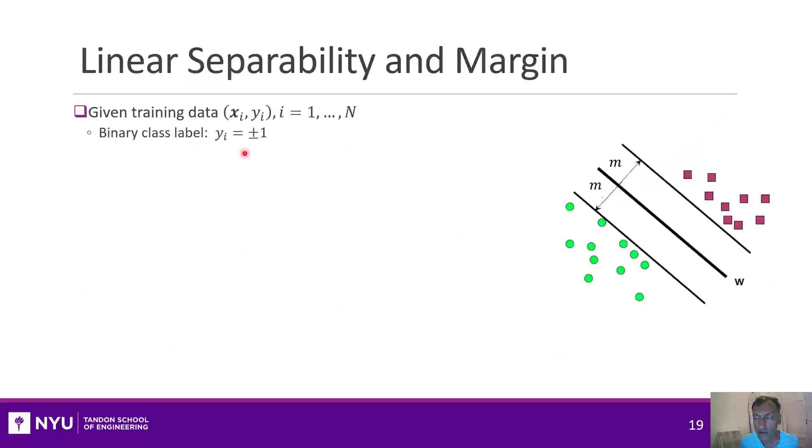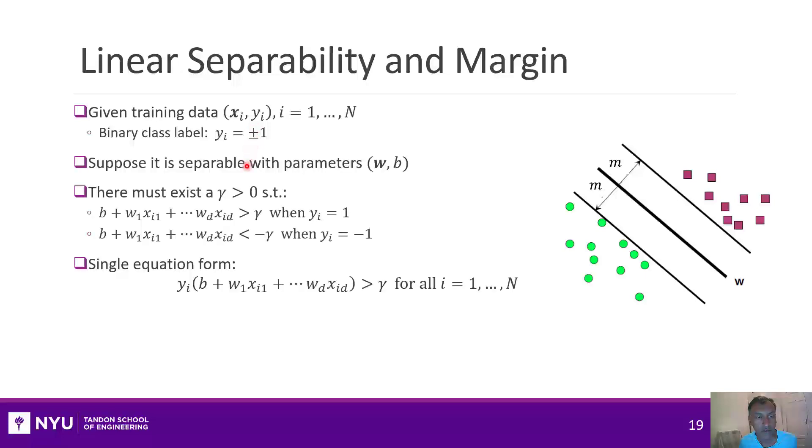Okay, next, let's introduce the concept of margin. So, again, let's assume that we have n samples of data with binary labels. Normally, I make the label 0 or 1, but it'll be a little easier for SVMs if we think of them as plus or minus 1. All right, let's assume that they are perfectly separable data.